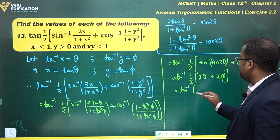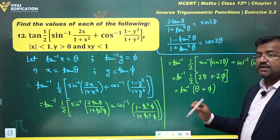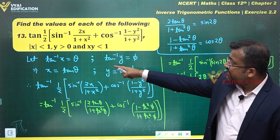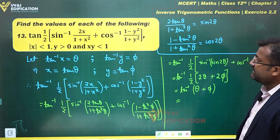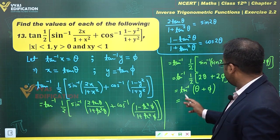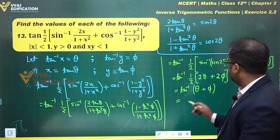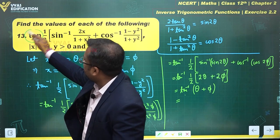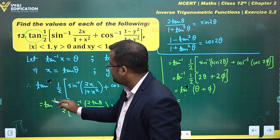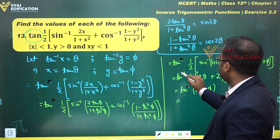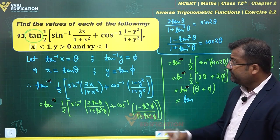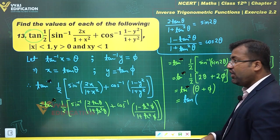Multiplying the half inside, the expression becomes tan inverse of (θ + φ). Now noting the original question carefully, it is actually tan of this expression — not tan inverse — so we have tan of (θ + φ).